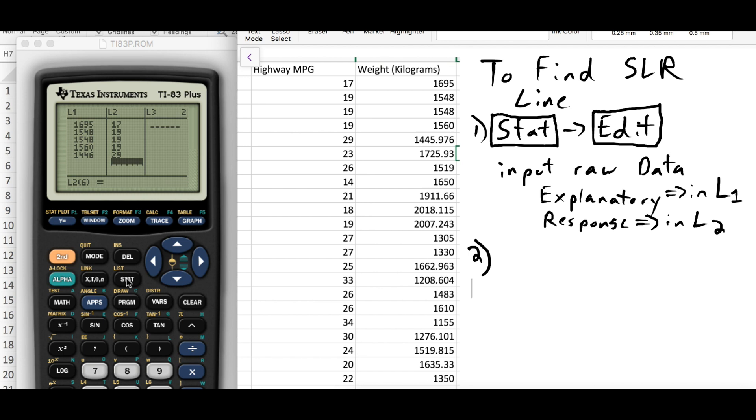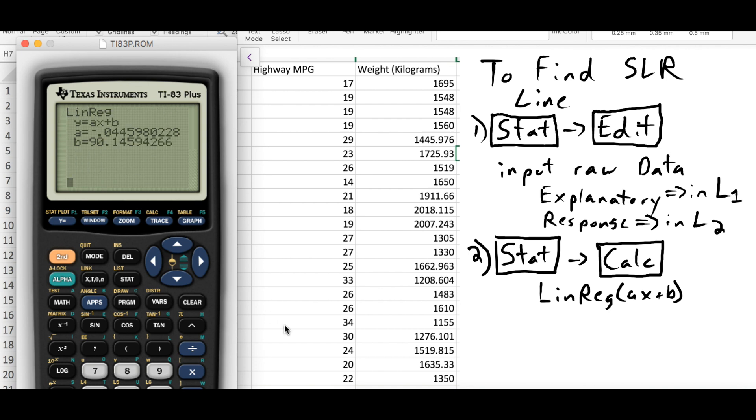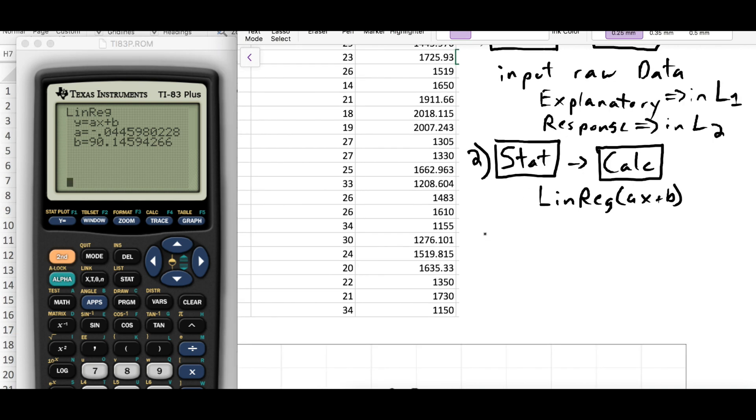And then I need to press stat again, and I'm going to go over to calc, and I want to go to linreg for linear regression. I'm going to go down and select that, or you could just hit the number four, hit enter, and there I have my simple linear regression line. Just for these few points here, they're telling me that the general form is y equals ax plus b, but I know a, and I know b, so I could say my simple linear regression line.